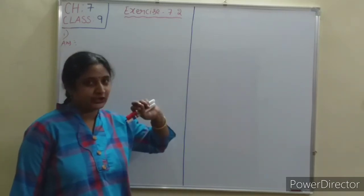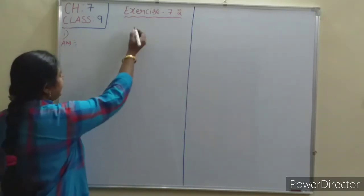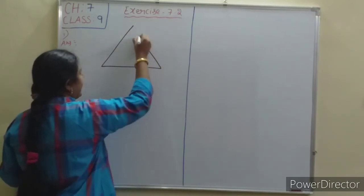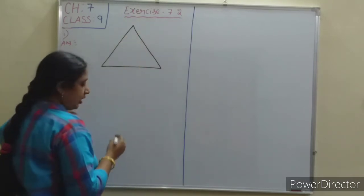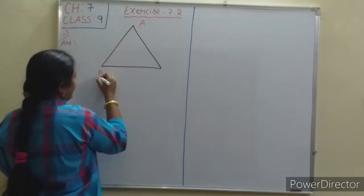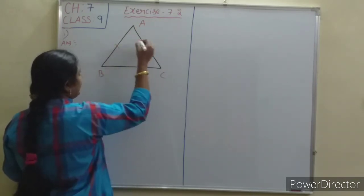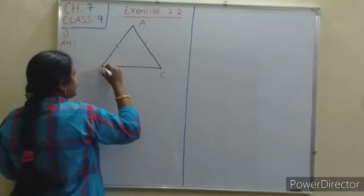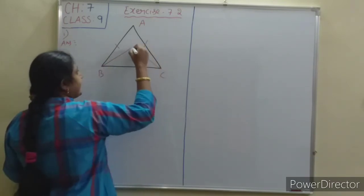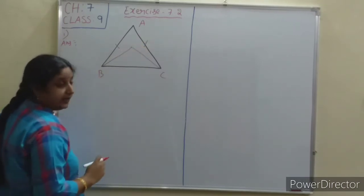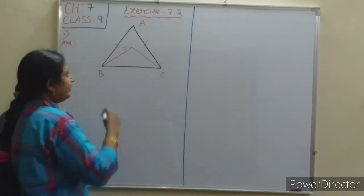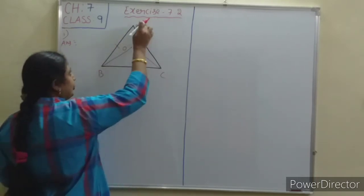In question number 1, triangle ABC is an isosceles triangle with AB equals AC. The bisectors of angles B and C intersect at point O, and then we join O to A.